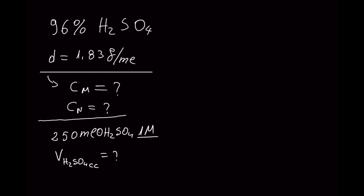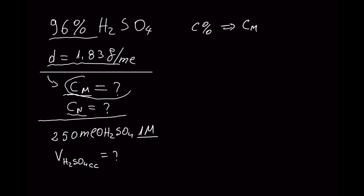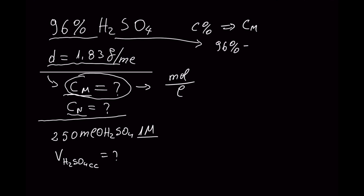Let's move now to a typical example that happens in the lab. In order to convert the percent by mass to the molar concentration — in this case for sulfuric acid — you need to know the density of the concentrated acid. You also need to know that molar concentration is expressed in moles per liter.